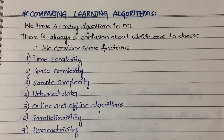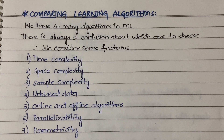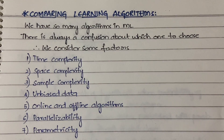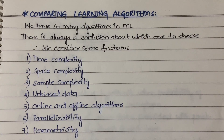In machine learning we actually have hundreds and hundreds of algorithms. Among those algorithms we need to pick one algorithm which is the best match for our problem. So how do you pick up that algorithm? Based on some criteria, based on some factors we are going to pick up the algorithm — let us see what those factors are in this video.